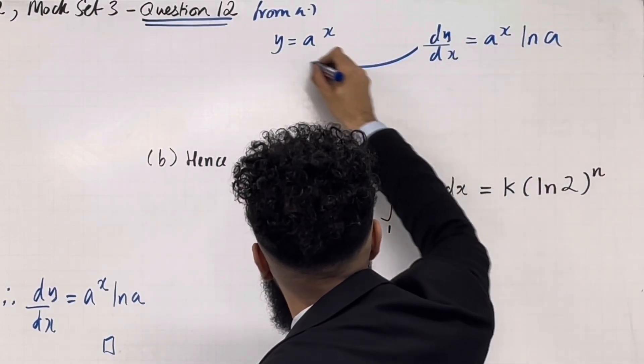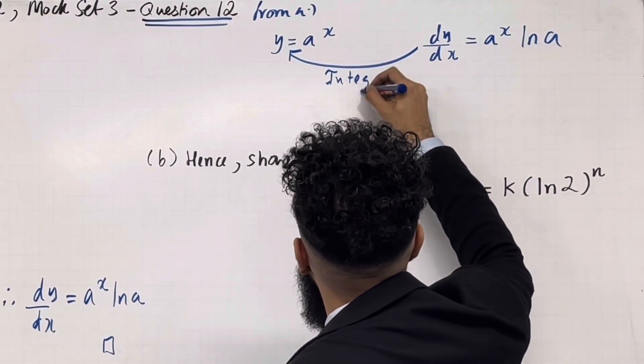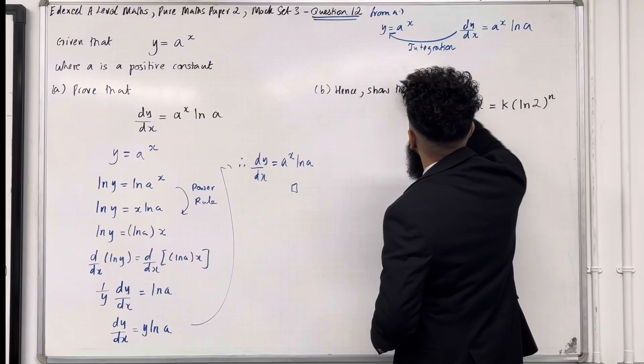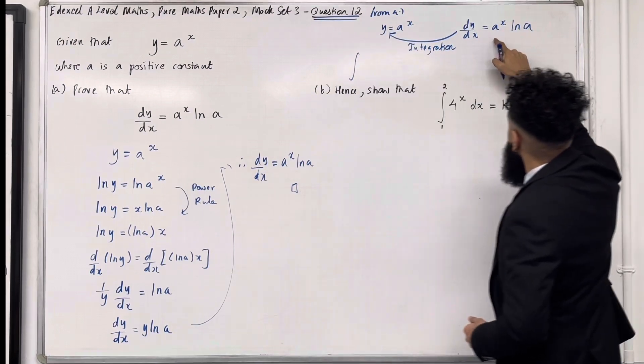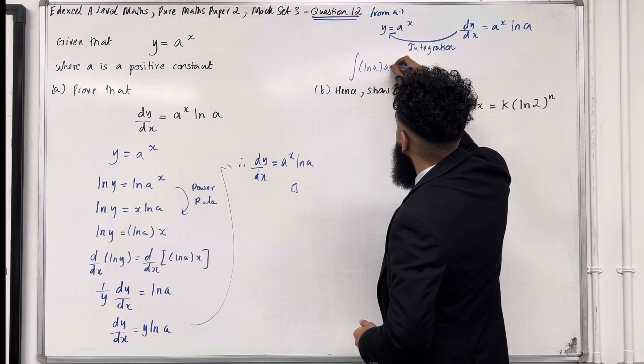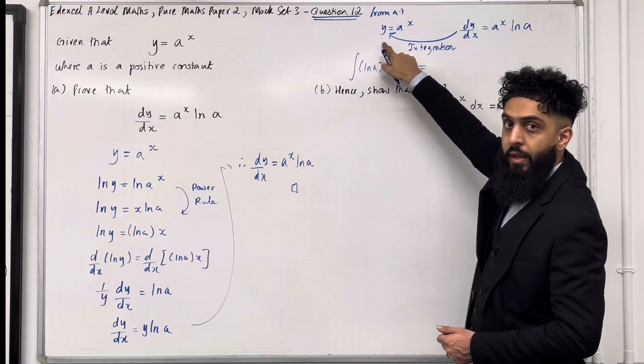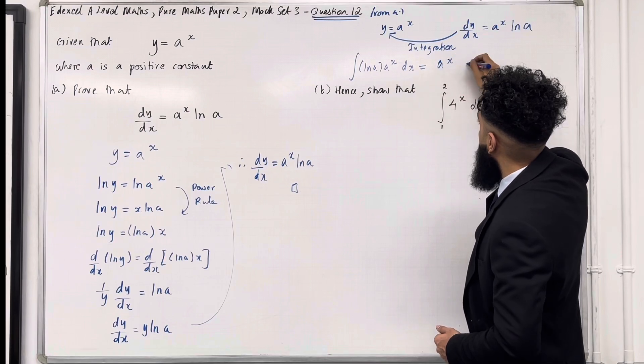Now going from dy over dx back to y is called the process of integration. So the integral of a to the power x ln a, in other words, the integral of ln a, a to the power x with respect to x, is precisely my y, which is a to the power x plus c.